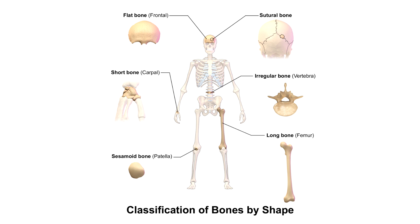Then we have short bones, which you can see here, and these are the same width and length so they kind of look like cubes. Examples of short bones are in the wrist — they're called carpals — and in the ankles they're called tarsals.